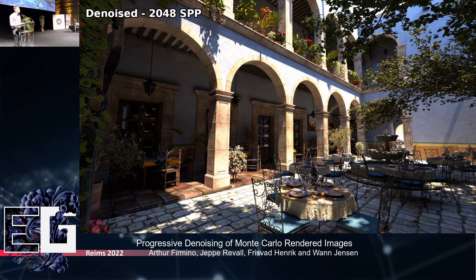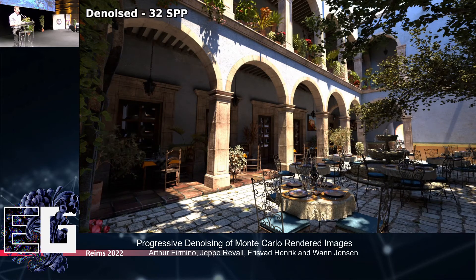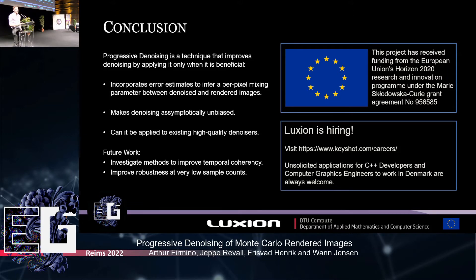The question remains: if you use a temporally coherent-based denoiser and apply progressive denoising on top of that, would it still be temporally coherent? To conclude: progressive denoising is a technique that improves denoising by incorporating it only when it is beneficial over the non-denoised image. It makes denoising asymptotically unbiased, ensuring convergence to the ground truth as the sample count increases, and it can be used on top of pre-existing high-quality image denoisers, as demonstrated in our experiments. Thank you very much.